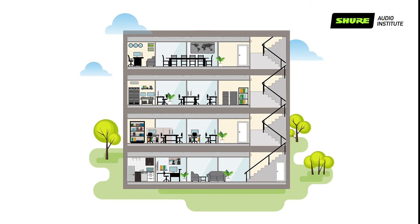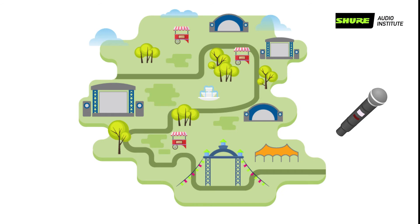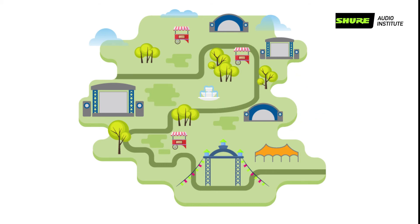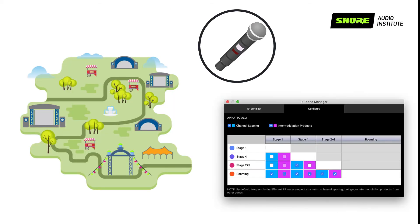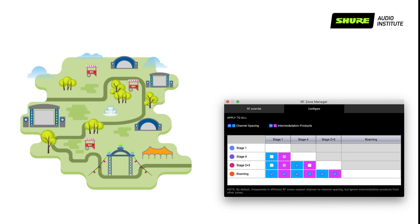A roaming frequency is a slightly different use case where one or more devices will be used in any RF zone at any given time, so it needs to be considered in each zone as a potential interferer. Reusing the building example, you might have one or more transmitters that will be used on any floor. Reusing the festival example, you might have one or more transmitters that will be used at any stage. To create this configuration in Wireless Workbench, add the frequencies for these roaming devices to their own zone, and respect channel-to-channel and channel-to-intermod spacing with every other zone. This way, it is expected that these frequencies will work while all other frequencies are in use, regardless of where the roaming devices are located.